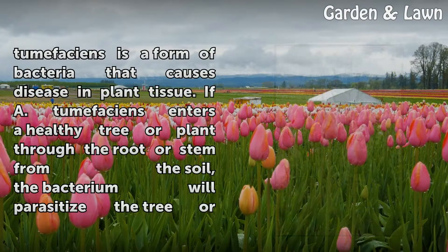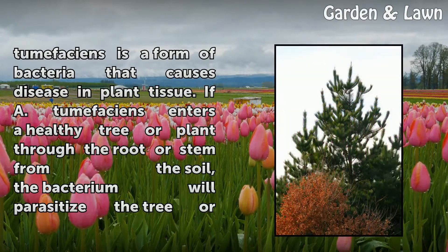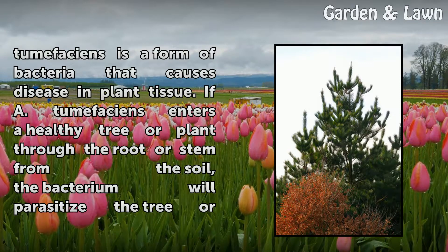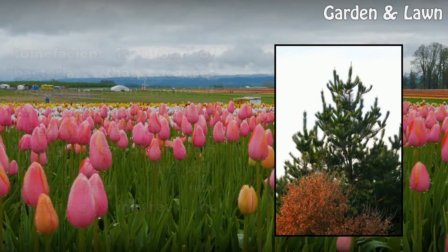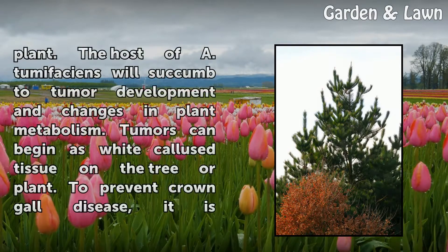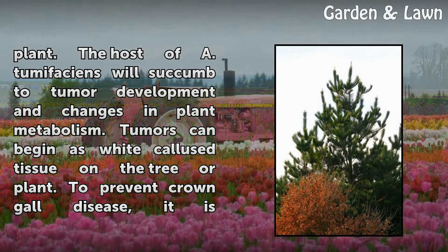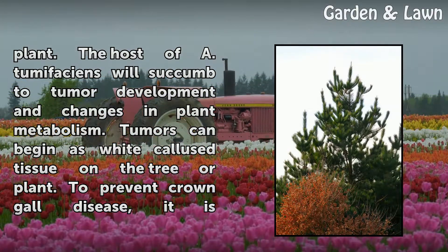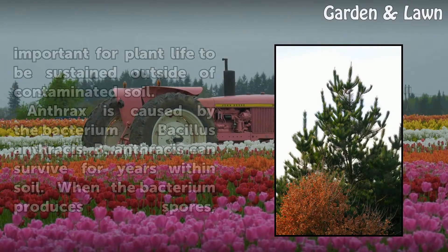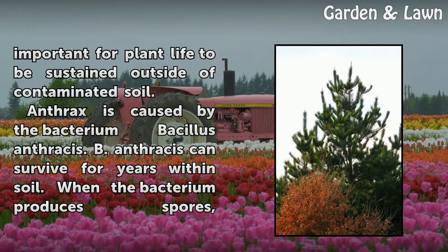Agrobacterium tumefaciens is a form of bacteria that causes disease in plant tissue. If A. tumefaciens enters a healthy tree or plant through the root or stem from the soil, the bacterium will parasitize the tree or plant. The host of A. tumefaciens will succumb to tumor development and changes in plant metabolism. Tumors can begin as white callus tissue on the tree or plant. To prevent crown gall disease, it is important for plant life to be sustained outside of contaminated soil.